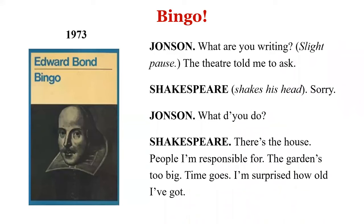B is for Bingo — a play written by the English playwright Edward Bond in 1973, subtitled 'Scenes of Money and Death.' In this play, Shakespeare appears as a character in his old age, capturing his last years of 1615–1616. In one scene, Ben Jonson meets Shakespeare and they discuss things. Ben Jonson asks, 'What are you writing?' and Shakespeare deflects, talking about his house and gardens.